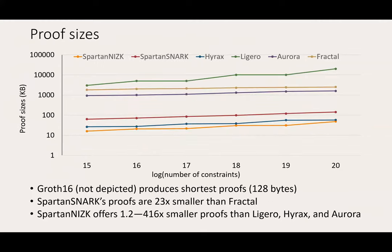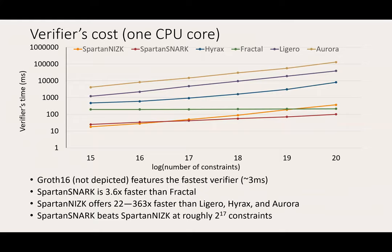Here is a graph depicting proof sizes under SPARTAN and its baselines. SPARTAN offers the smallest proofs except when compared to Groth16. Another graph depicts the verifier's cost: SPARTAN's verifier is faster than all baselines except Groth16. Notably, the SNARK variant of SPARTAN beats the NISC variant at about 2^17 constraints.